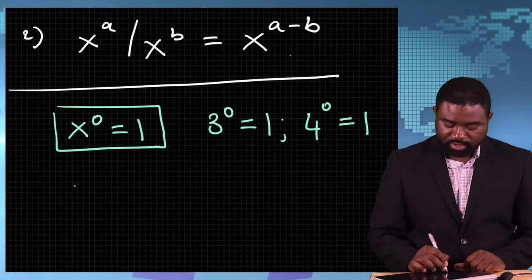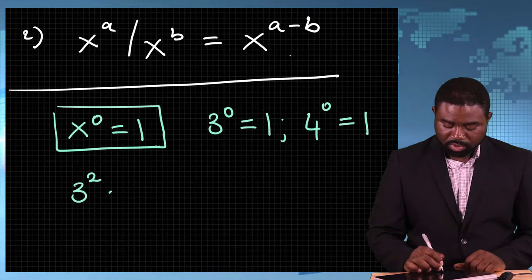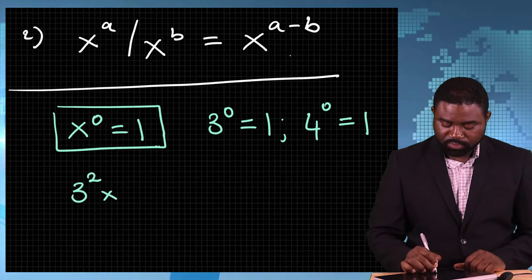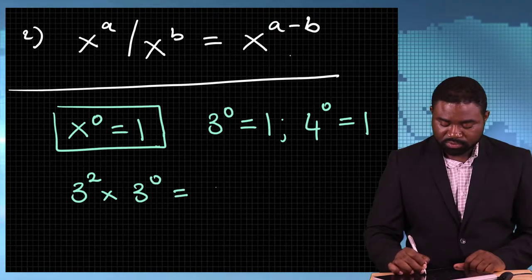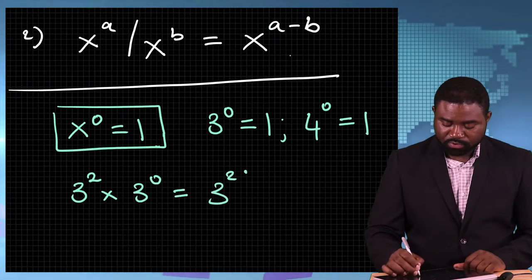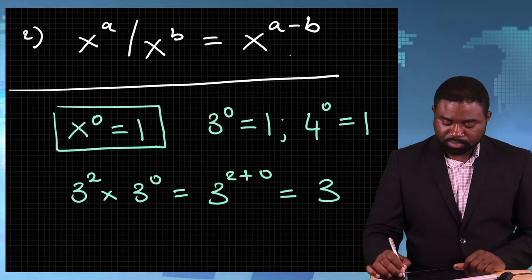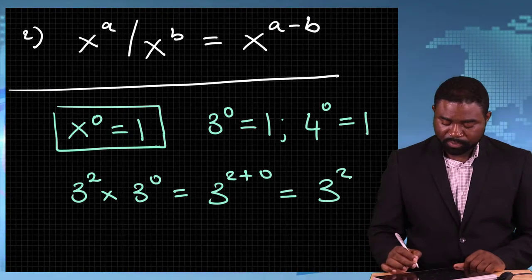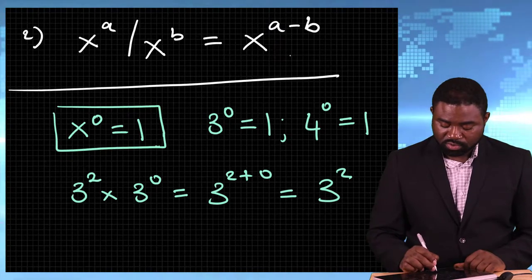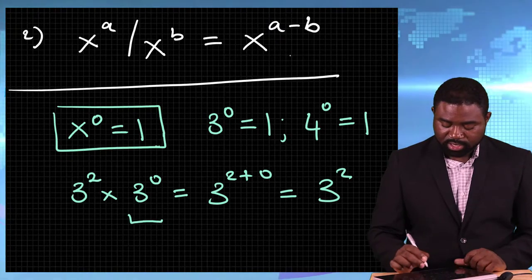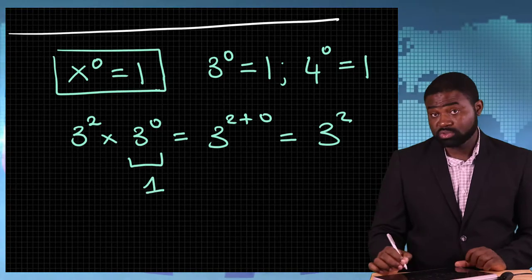That means that 3 raised to the power 2 multiplied by 3 raised to the power 0 is equal to 3 raised to the power 2 plus 0, which is equal to 3 raised to the power 2. Therefore, it is logical for us to conclude that 3 raised to the power 0 is equal to 1.